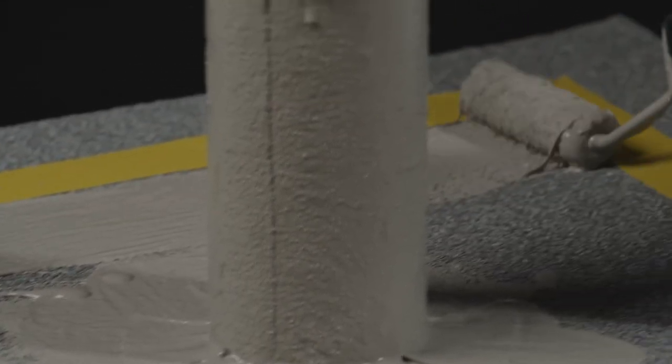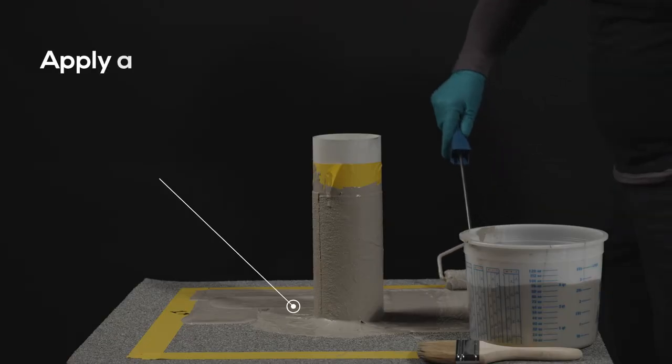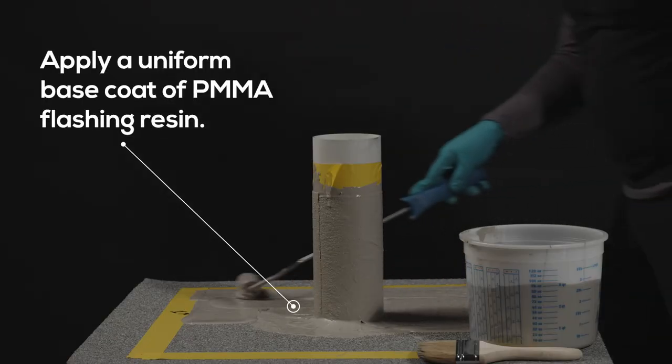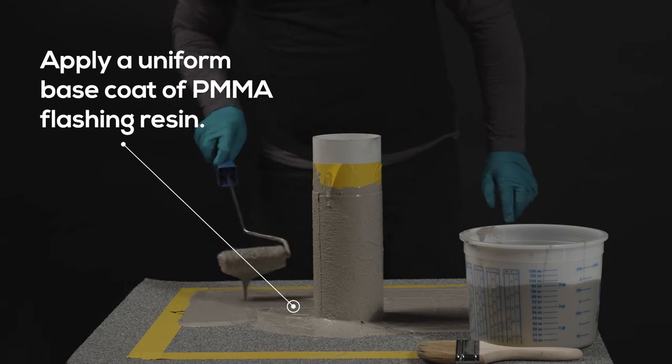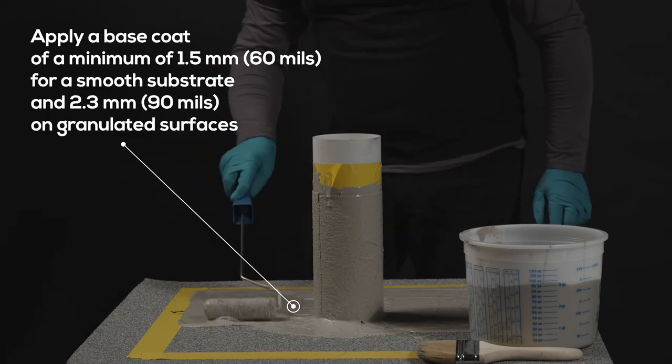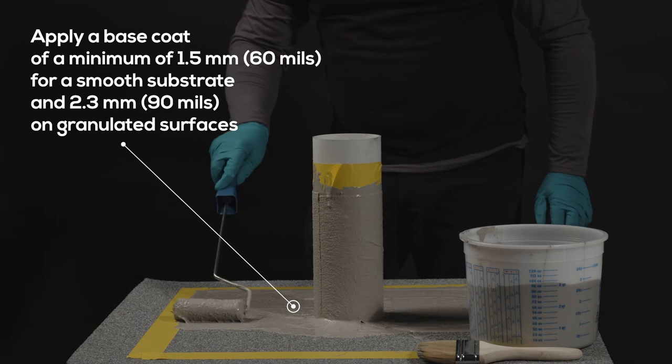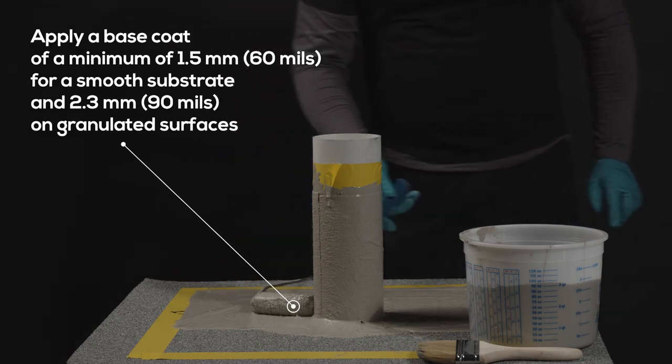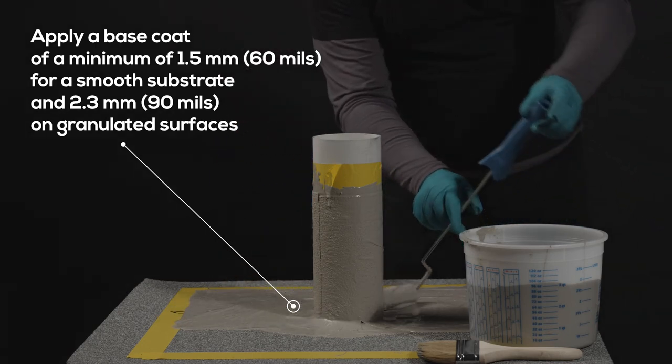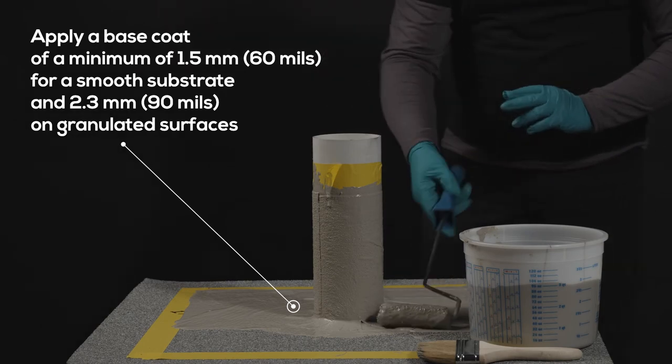Once the skirt flashing is complete, apply a uniform base coat of PMMA flashing resin around the base of the penetration. Again, apply a base coat of a minimum of 1.5 mm or 60 ml for a smooth substrate and 2.3 mm or 90 ml on granulated surfaces.